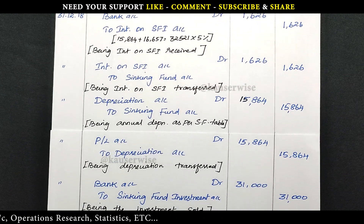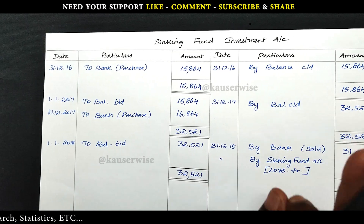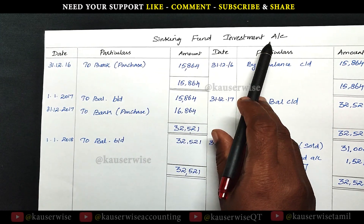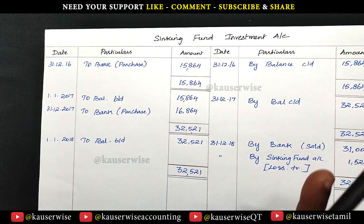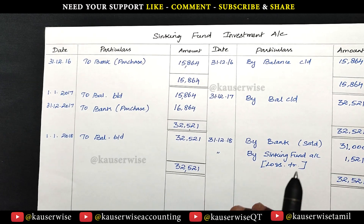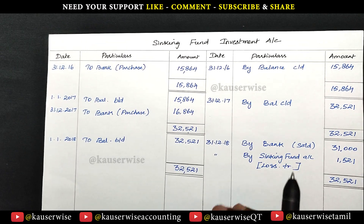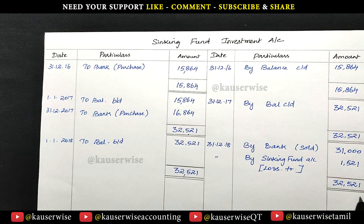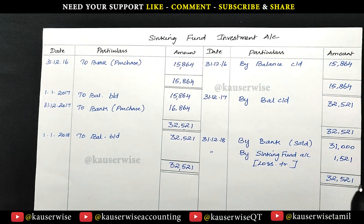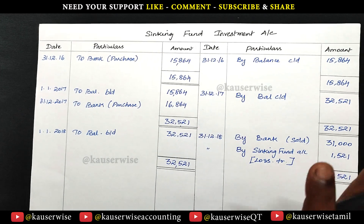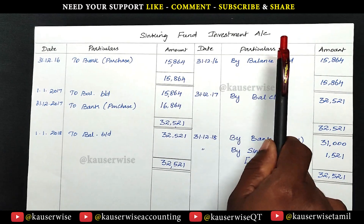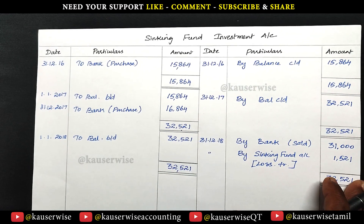We are going to prepare three important ledgers: number one, sinking fund investment account; number two, lease account — because at the end of three years the lease amount of Rs. 50,000 will be transferred to sinking fund account; and number three, sinking fund account. Let's see the first one — sinking fund investment account — and refer to the journal entries.